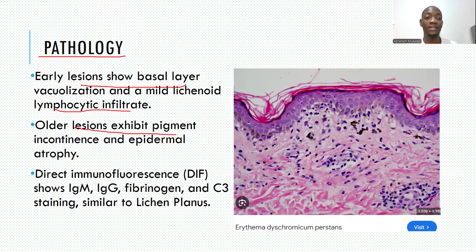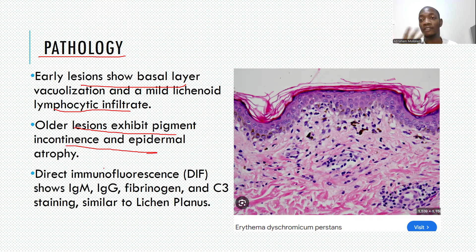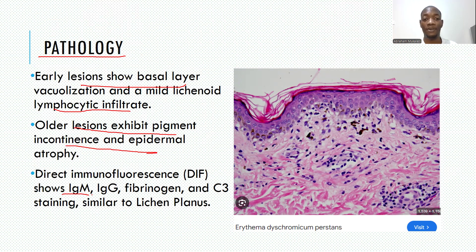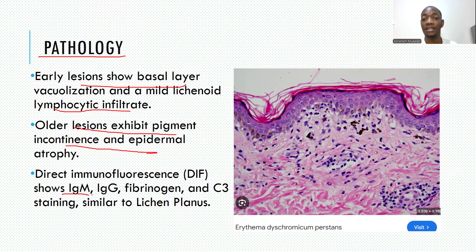In other lesions, you can see pigment incontinence, where melanin drops into the dermis and melanophages take it up — these are features of melanin incontinence. When you do direct immunofluorescence, you will see positivity for IgM, IgG, fibrinogen, and C3 staining, which is similar to what you see in lichen planus, but this is a very distinctive disorder.